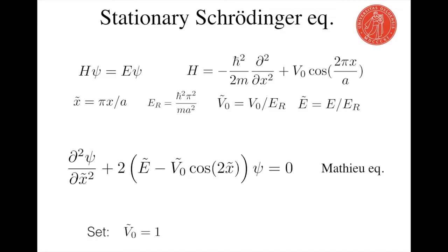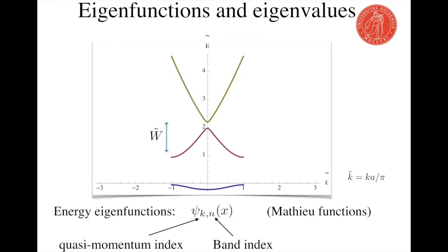Let's also for simplicity set the potential amplitude to be one. The solutions to the Mathieu equation are of course the Mathieu functions, which are labeled by a quasi-momentum index k and a band index n.